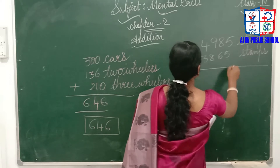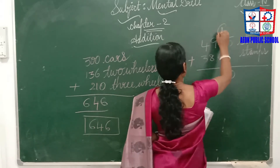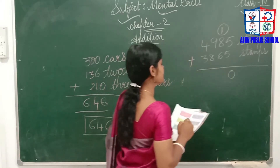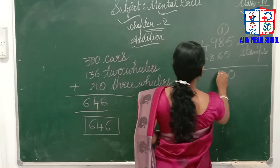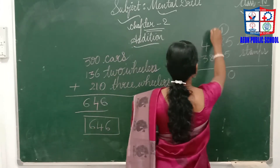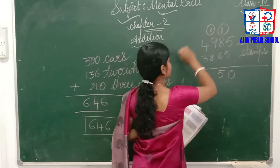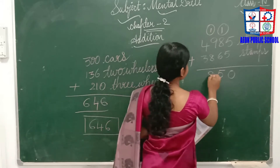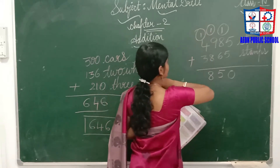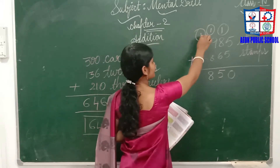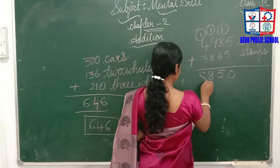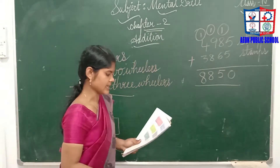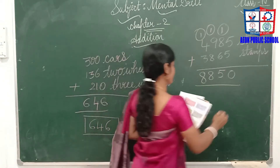5 plus 5 is 10, 8 plus 6 is 15 — carry 1, 9 plus 1 is 10 plus 8 is 18 — carry 1, 4 plus 1 is 5, 5 plus 3 is 8. So he is now having 8,850 stamps.